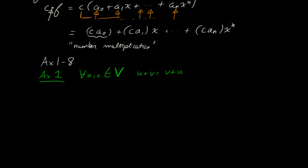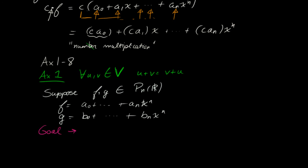Suppose f and g belong to P_n(R). Then I'm going to rewrite f as a_0 to a_n x^n, and then g as b_0 dot dot dot plus b_n x^n. So my goal is to show that f plus g is equal to g plus f.